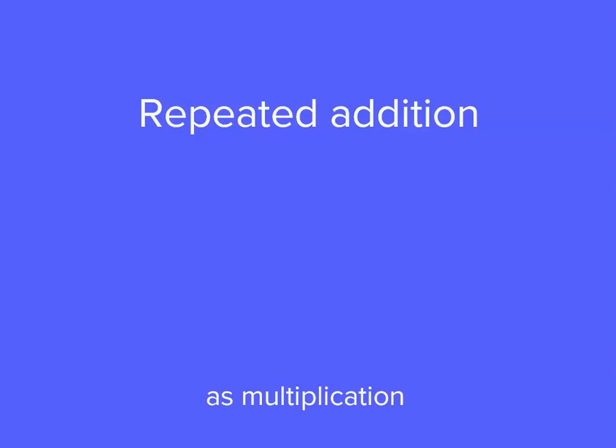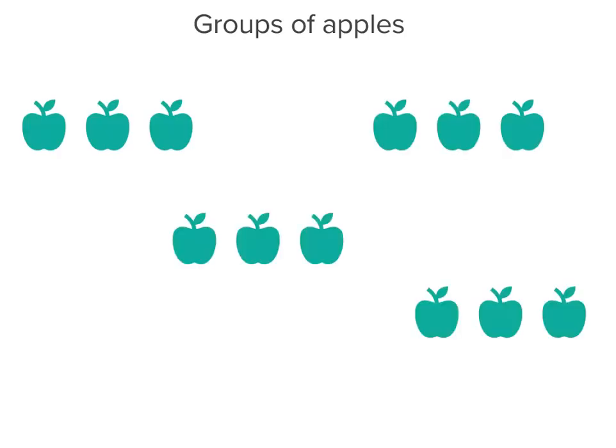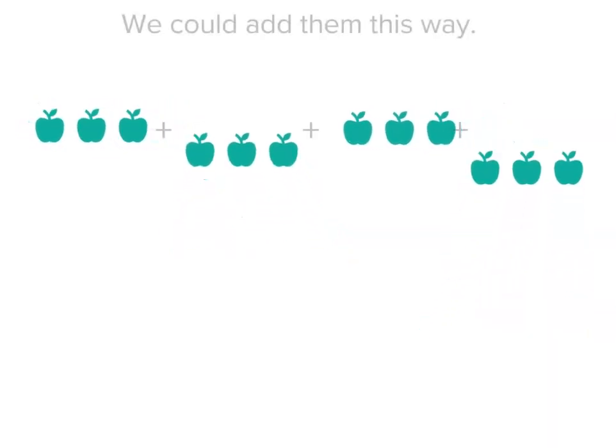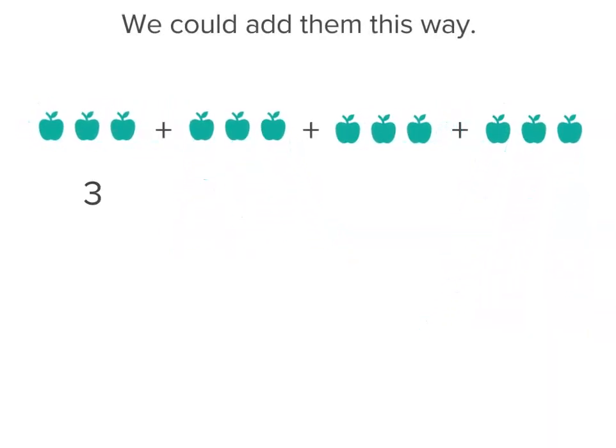Let's see how we can treat a problem where we need to add something a number of times. If I've got groups of apples, and each group has three apples, and I've got four groups of them, I could actually write it as three plus three plus three plus three, and I could solve that quite easily.